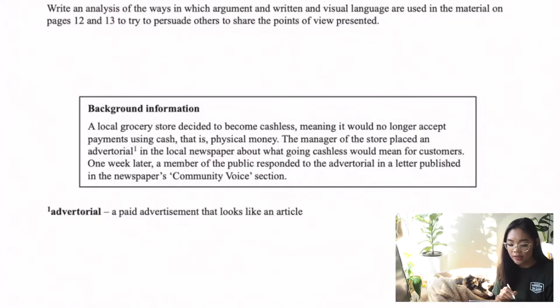Without reading the background information, you might head in there and possibly come up with an entirely different context altogether, which might screw over your actual analysis and the author's intention. So never skip the background information. Make sure you have a read of it and also pick out the gems that you find in it. Background information is great for picking up keywords — words that you might want to use throughout your own language analysis, and it also has really good details about the article. In this case, you can see that a member of the public responded.